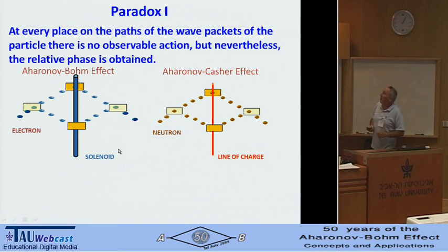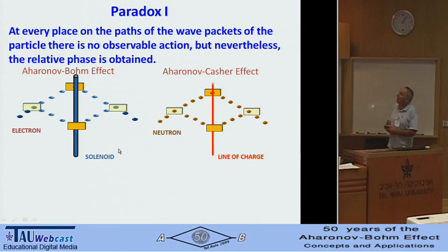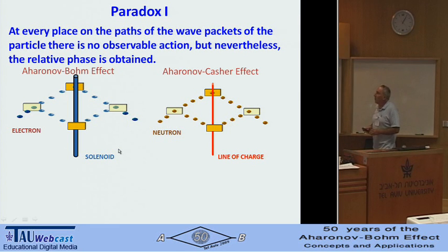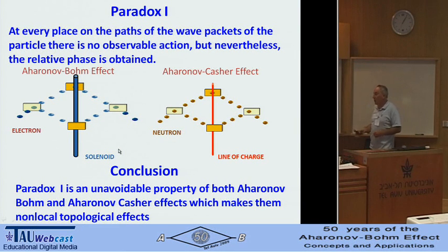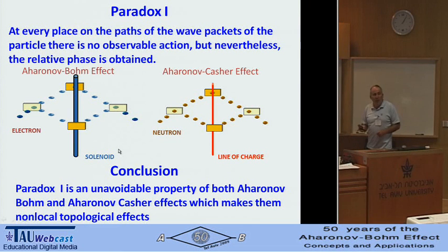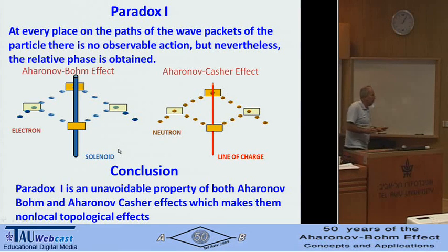Paradox One remains: at every place on the path of the wave packet of the particle, there is no observable action, yet the relative phase is obtained. My conclusion is that Paradox One is an unavoidable property of both the Aharonov-Bohm and Aharonov-Casher effects, which makes them non-local, topological, and very interesting effects.